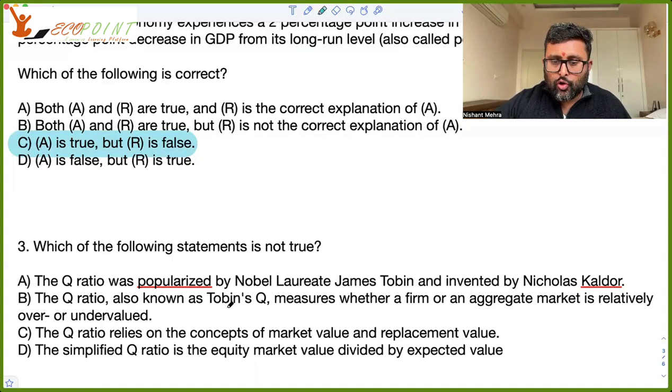Q ratio, also known as Tobin's Q, measures whether a firm or aggregate market is relatively over or undervalued, right? This is also true. This is definitely true because in case if the Q ratio is going to be more than one, it shows that the firm is overvalued. If it is less than one, firm is undervalued, right? So when you say firm is overvalued, it means that the market value is more than the replacement cost of the asset. Q ratio relies on the concept of market value and replacement value. That's true.